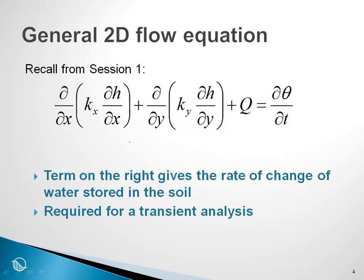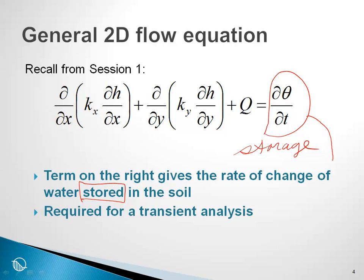Going back to our partial differential equation, recall from session one this was the general 2D flow equation. The term on the right gives the rate of change of water stored in the soil — this describes the storage. It is the rate of change of volumetric water content with time that makes the process transient, and so if we want to account for this, we have to do a transient analysis.